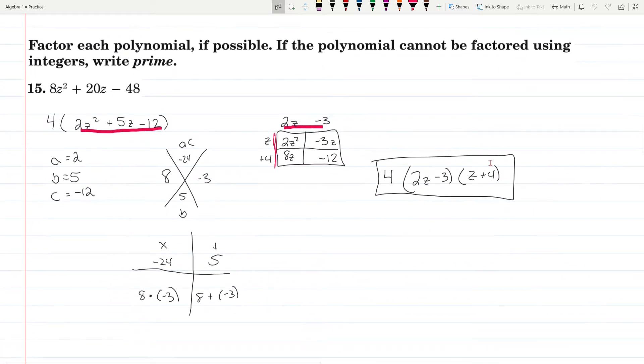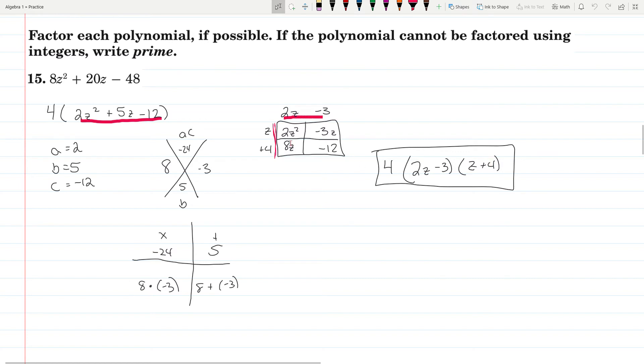Question 15: You need to look out for is there a GCF you can pull out first. In this case, when you have a bunch of even numbers, you can at least do 2. And then you see they're still all even, so let's do another 2. If you divide all these by 4, you have 4 times 2z squared plus 5z minus 12.